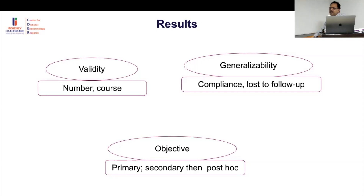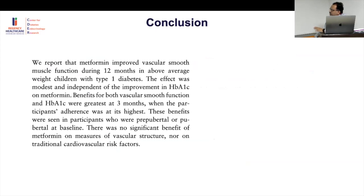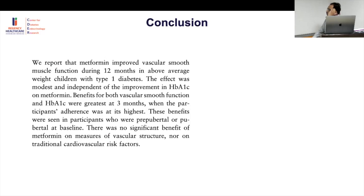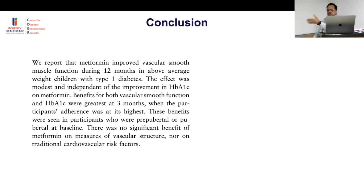The conclusion states that metformin improved vascular smooth muscle function during 12 months in above-average weight type 1 diabetics. However, the GTN response was the only significant vascular finding — the FMD was not significantly different — so this conclusion may be a slight overstatement of the vascular benefit.